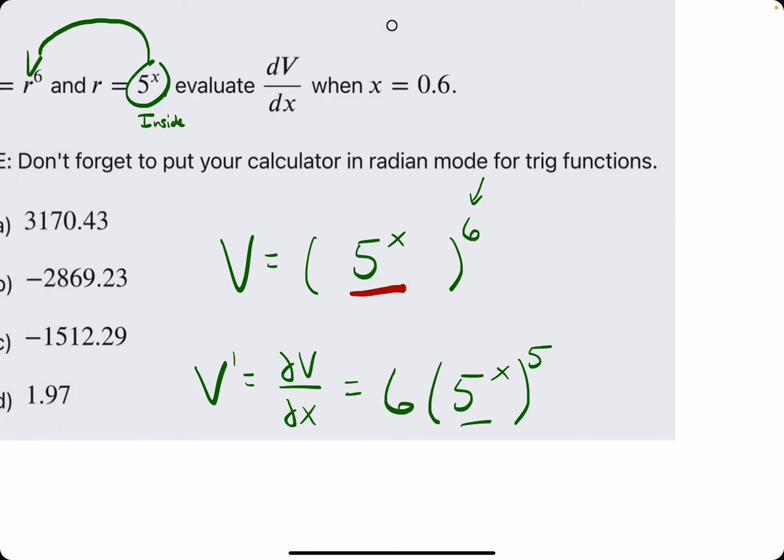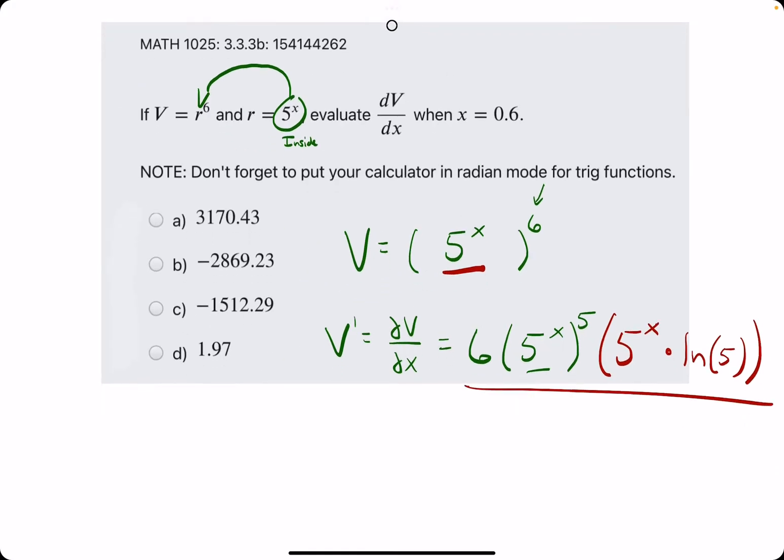So, then the inside function is 5 to the x. So, the derivative of 5 to the x, which we will multiply this by now, is 5 to the x times the natural log of 5. This is our whole derivative, so now we just plug in 0.6.